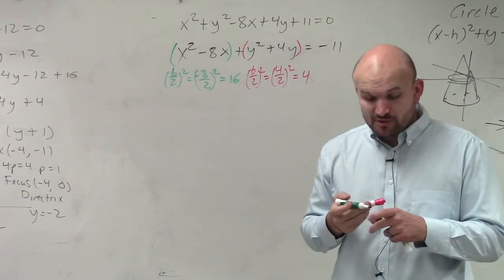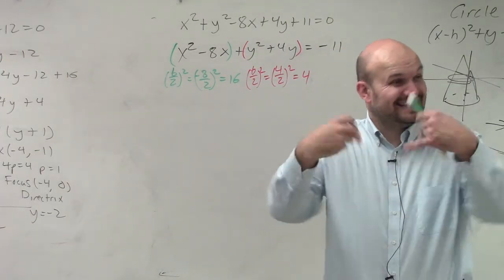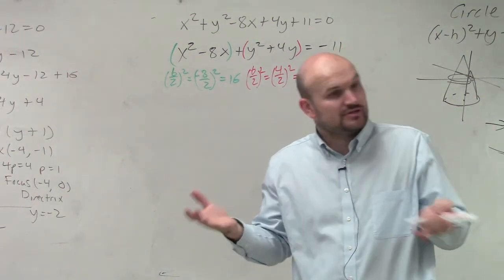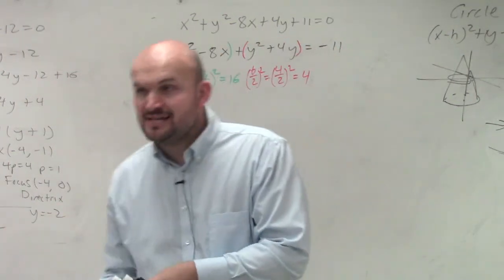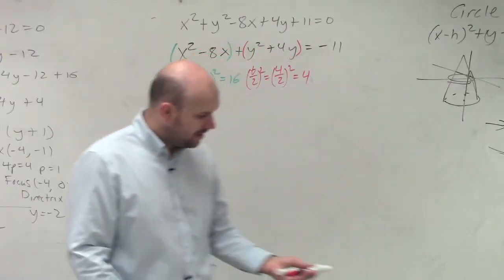Now remember, when you complete the square, you want to add it inside your parentheses. That creates your perfect square trinomial. And then whatever you do on one side, you have to do on the other side.